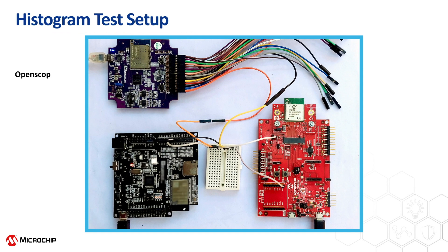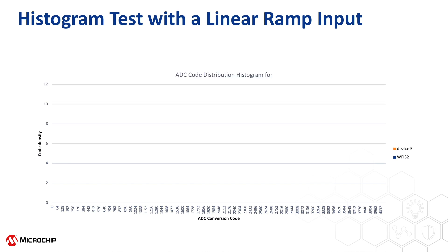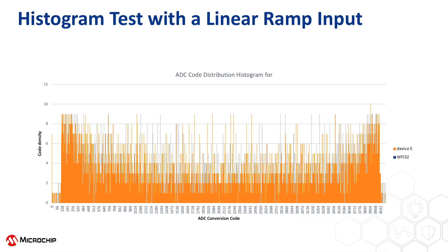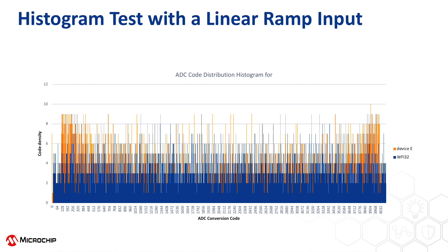This video uses an OpenScope MZ from Digilent as a USB function generator to generate a sawtooth wave. We fed this 3.3-volt low-frequency linear ramp input to the ADC of the WFI32 and another device with similar functionality and specifications. Once the ADC conversion data is processed, we can visualize the code distribution function using a histogram. As you can see, the histogram of similar devices from other vendors are distributed unevenly. In comparison, the code distribution of WFI32 is highly linear with an even distribution.